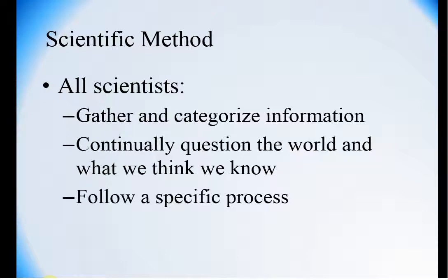In order to make some kind of conclusion about our world, we have to start with what we can see and go through a very systematic process. For us, we're going to call this a scientific method. Regardless of what field you are in, scientists are going to gather information. It's not enough just to gather information. You have to learn how to categorize it. How are we going to use that information?